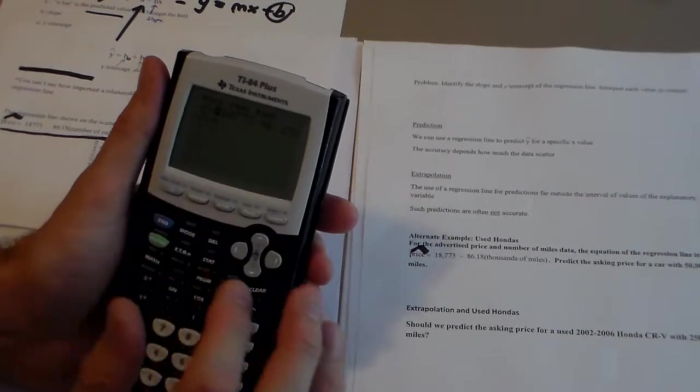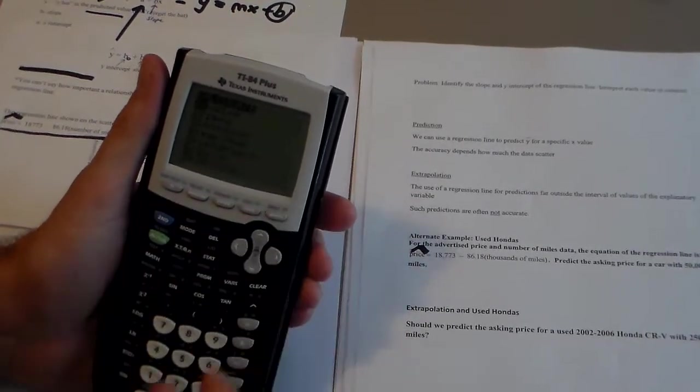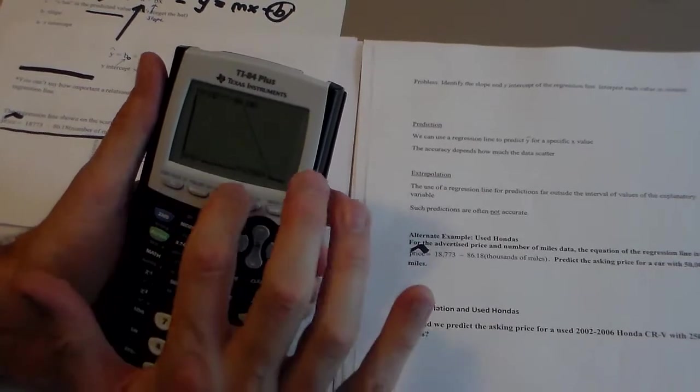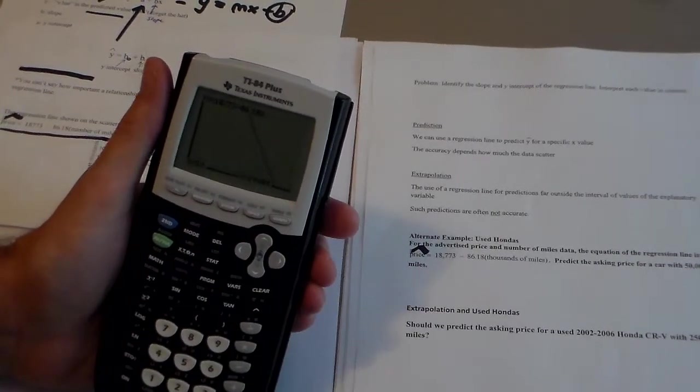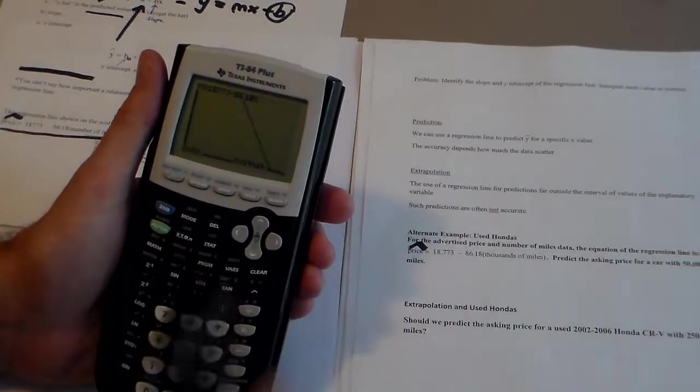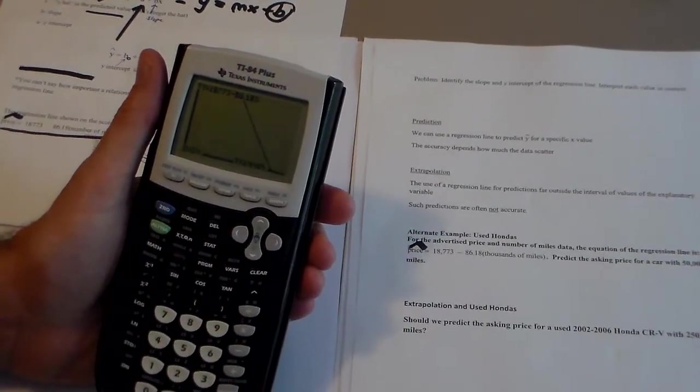So let's get to my Y equals screen. Let's hit second calc trace value, and then hit 50. And it tells me what the value of that car is. So if the car had 50,000 miles on it, I can use this equation to predict how much it's worth.